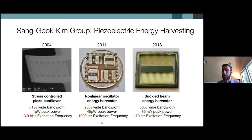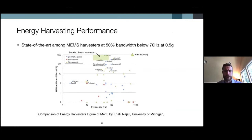Next, our group demonstrated how this could be done over a much wider bandwidth of different excitation frequencies, in the form of a clamped-clamped beam oscillator. And then finally, the device I want to talk about today is a low frequency buckled beam energy harvester that operates at low frequencies below 100 Hz — an array of buckled beams excited over a very wide bandwidth of low frequencies, though with somewhat lower power generation than expected.